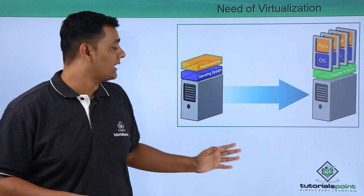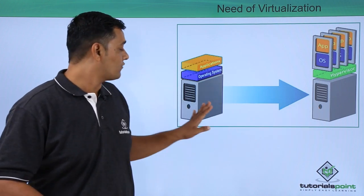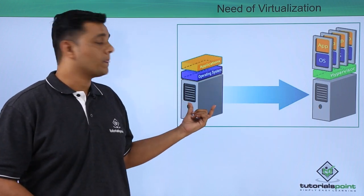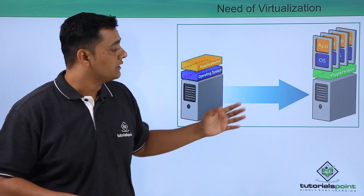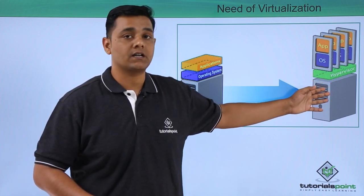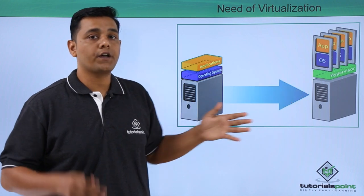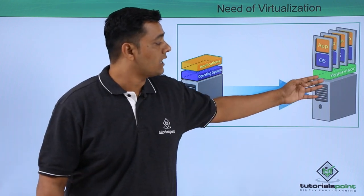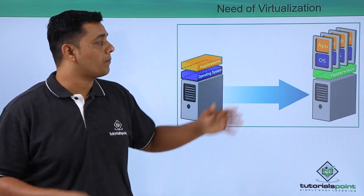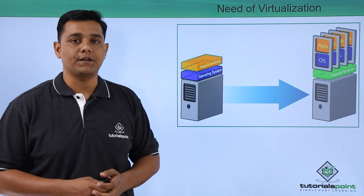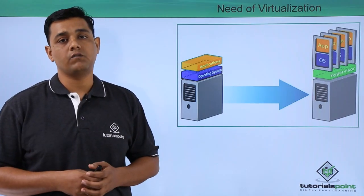In this example we can see a traditional PC compared to a virtualized computer. In a traditional setup there is one CPU, one operating system, and one application. But with virtualization, there is one CPU using a hypervisor — a virtualization software that acts as a mediator to create virtual machines. With the hypervisor, we can create many operating systems, and with those operating systems we can run different types of applications. In the next video we are going to see how virtualization works.